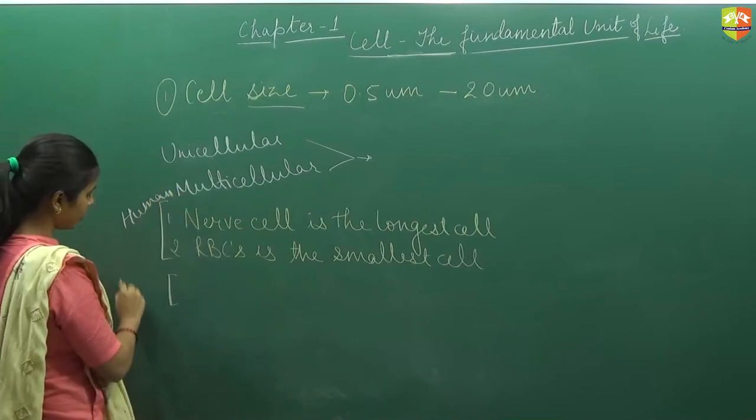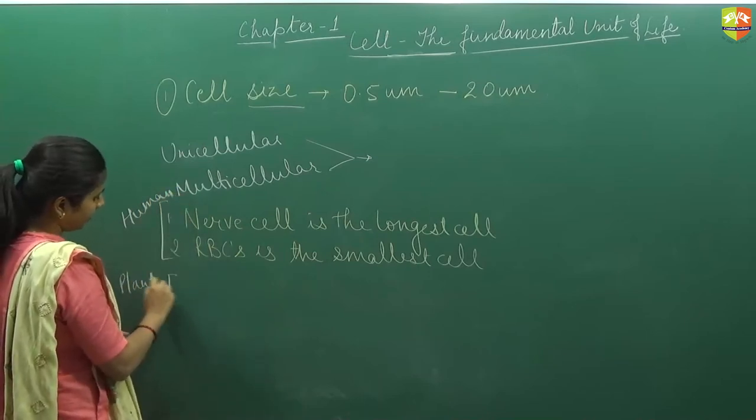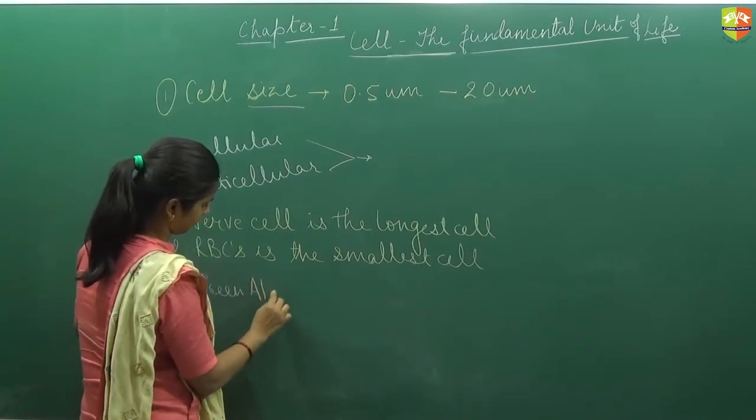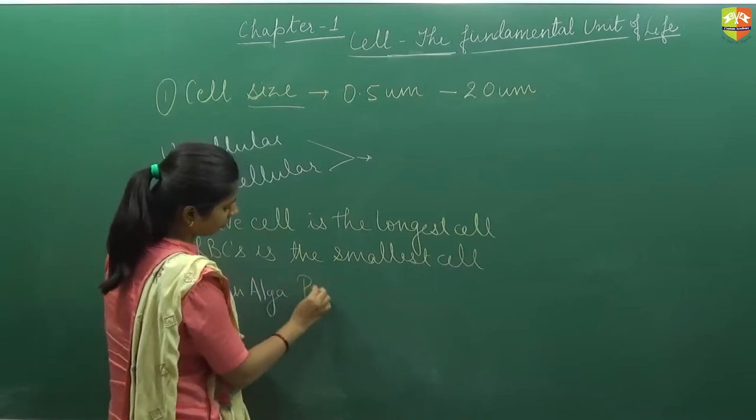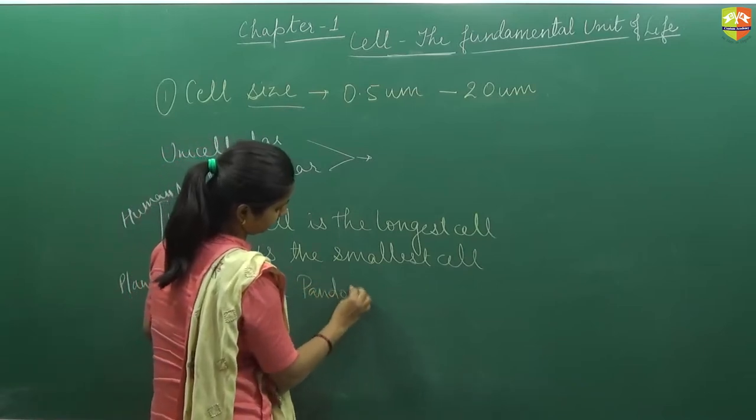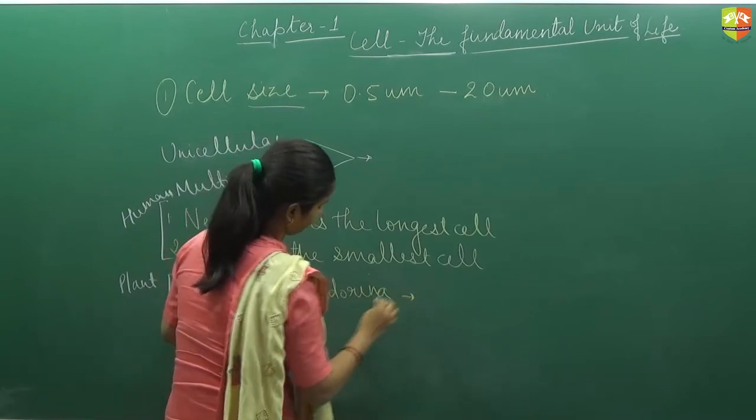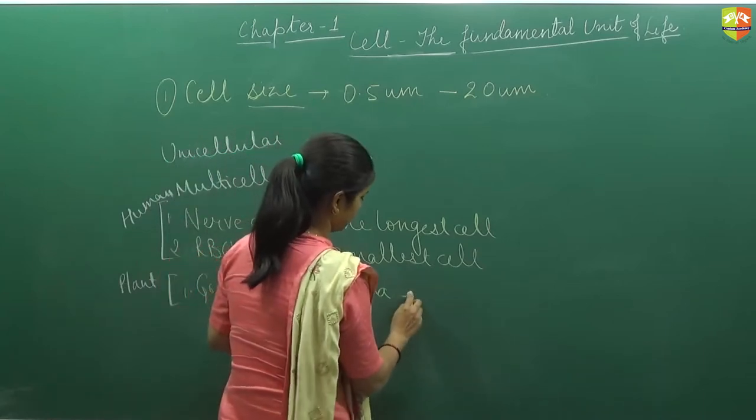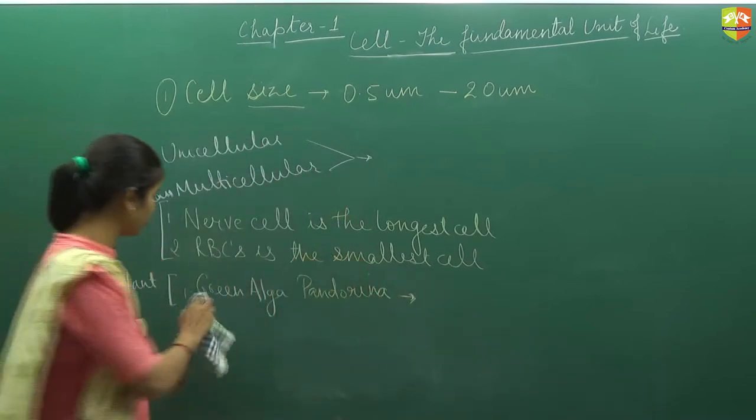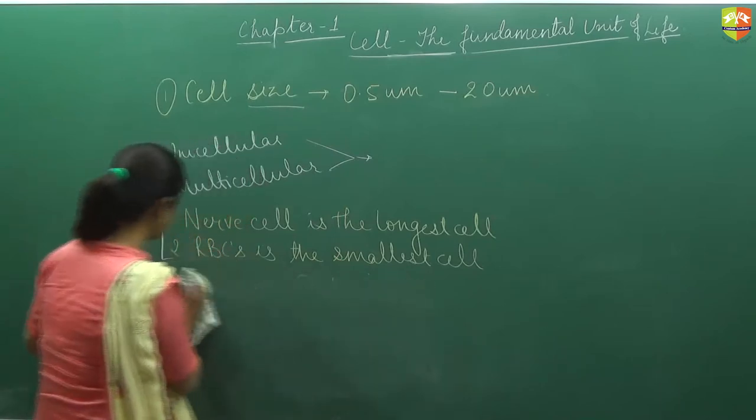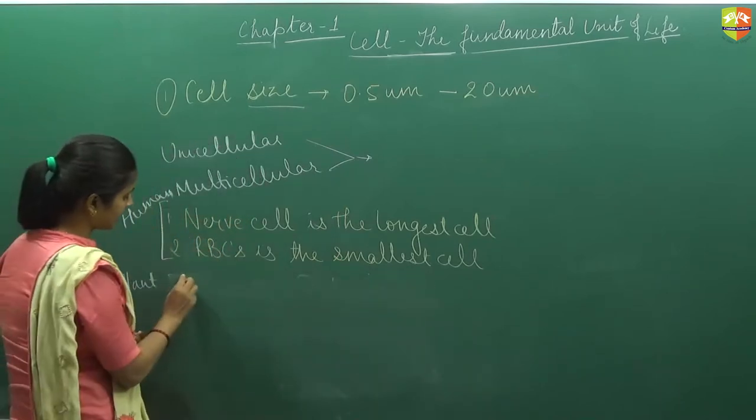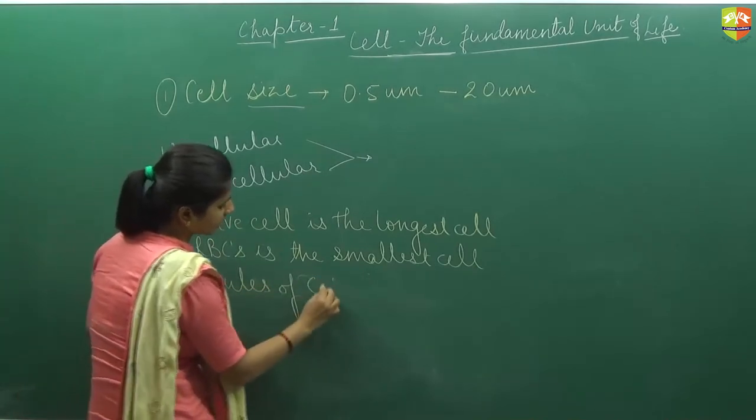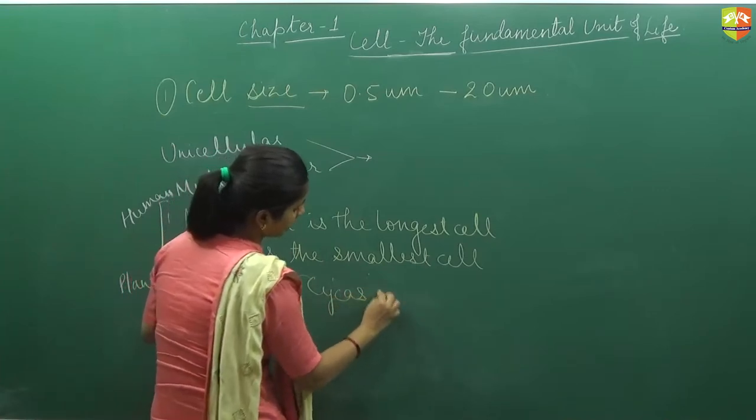Second case we will consider of plant. In plant, there is one green alga whose name is Pandorina. In plant, ovule of Cypress is the largest cell.